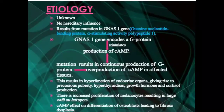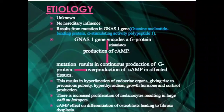The etiology is mainly a mutation in the GNAS1 gene — the guanine nucleotide binding protein alpha stimulating activity polypeptide — which produces cyclic AMP and leads to overproduction of cAMP in the affected sites. This can give rise to endocrine disorders such as precocious puberty, hyperthyroidism, growth hormone and cortisol production, and can cause melanin pigmentation such as café au lait spots, as well as altered differentiation of osteoblasts leading to fibrous dysplasia.